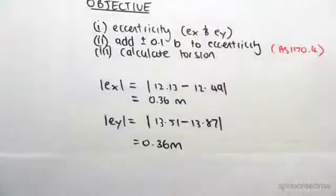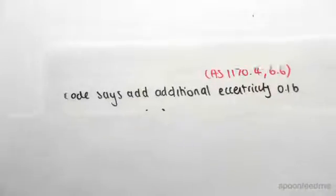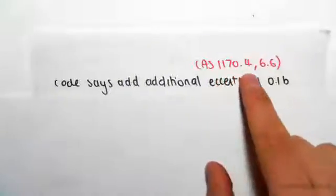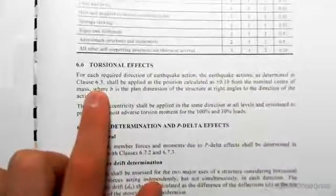Now the code says in AS1170.4 section 6.6—section 6.6 is specifically for torsional effects, which is what we're doing now. So if we go to that section, let me zoom in.